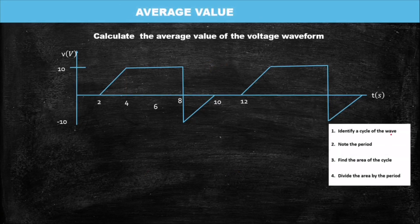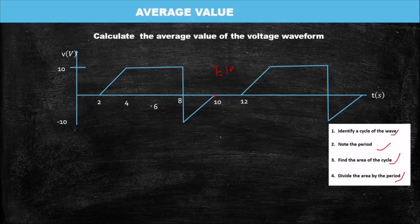For the average value, we need to identify the wave cycle, note the period, find the area, and divide through by the period. The period is ten seconds because the cycle moves here, comes here, goes down, comes back, and repeats. We take just one cycle. We identify the planes or shapes — we have regions one, two, and three. With average value we use normal area, not squared area.